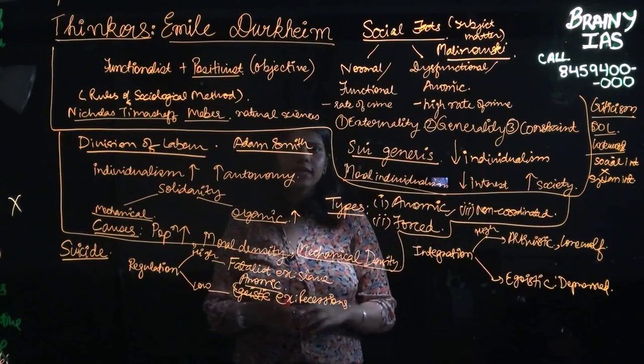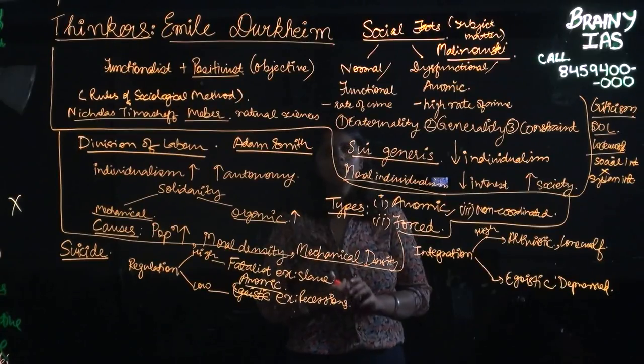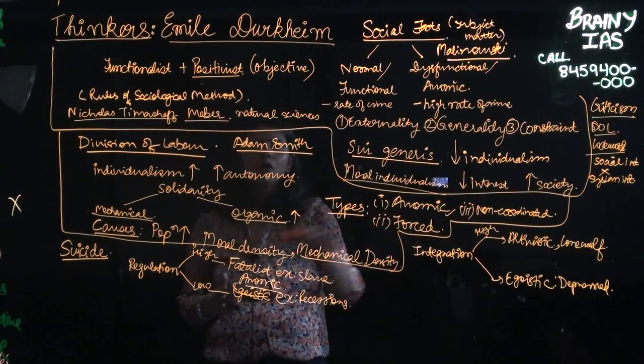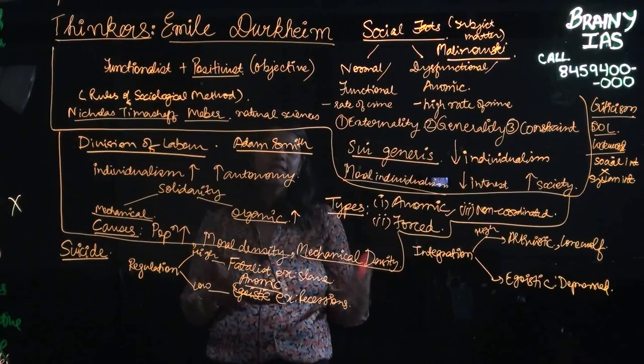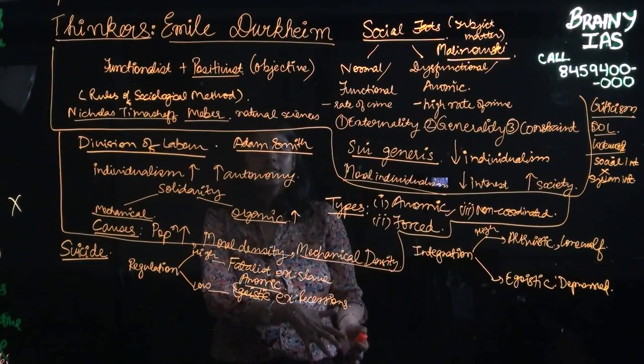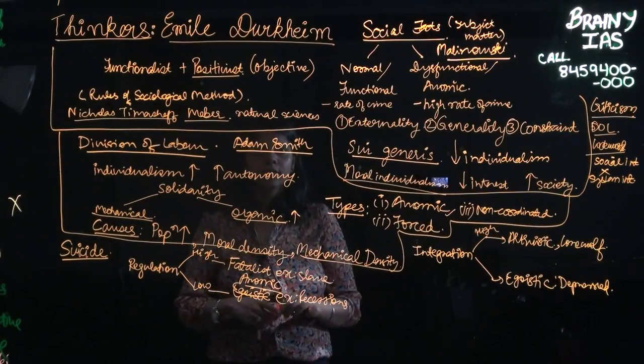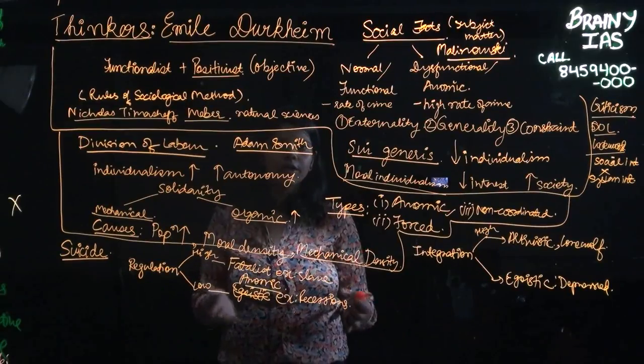So these were the four types of suicide that Durkheim talked about. Now as you can say, in all of these things, he has basically pointed out to the social conditions responsible for an individual suicide. So how far is he right in that?